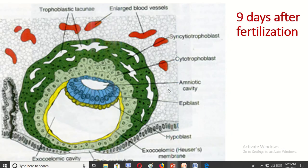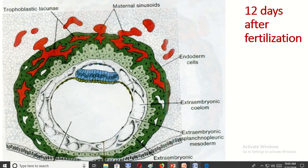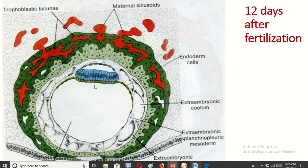This is nine days after fertilization. You can see the embryoblast has converted into epiblast and hypoblast. The trophoblast has converted into two layers: cytotrophoblast and syncytiotrophoblast. By 12 days after fertilization, the extraembryonic mesoderm begins to form.